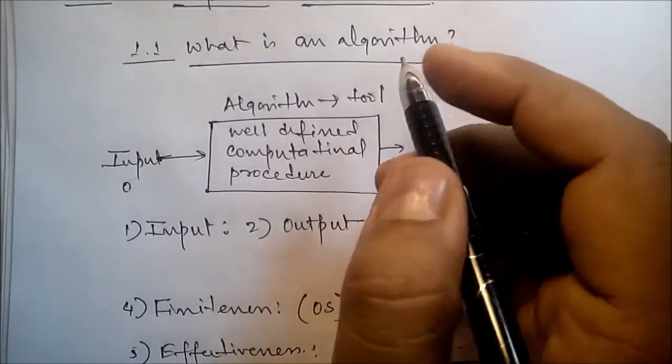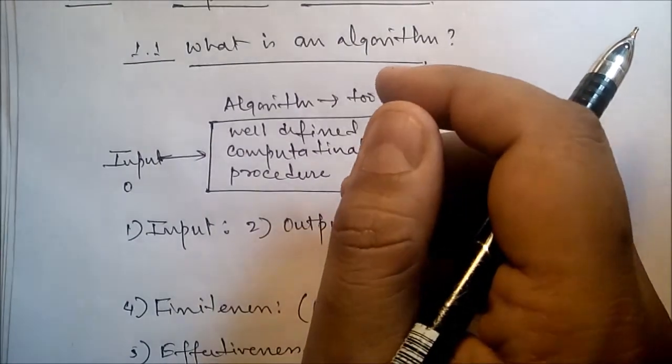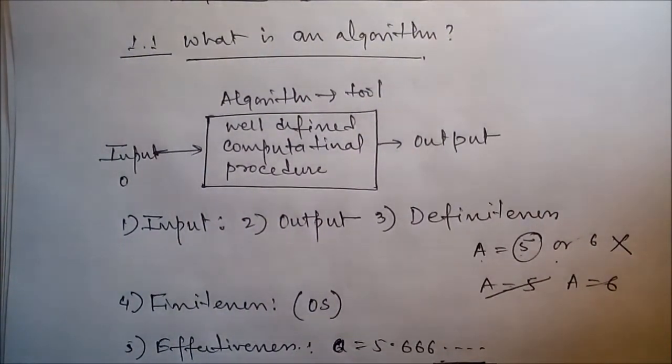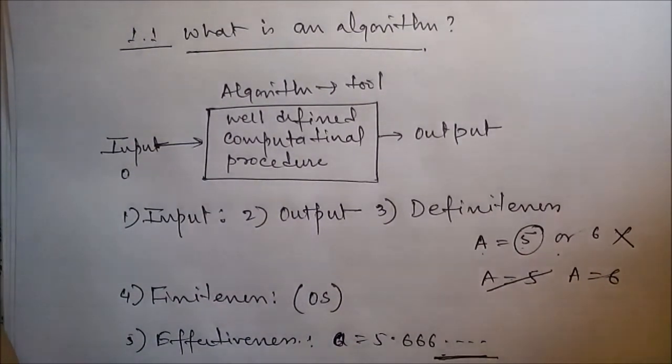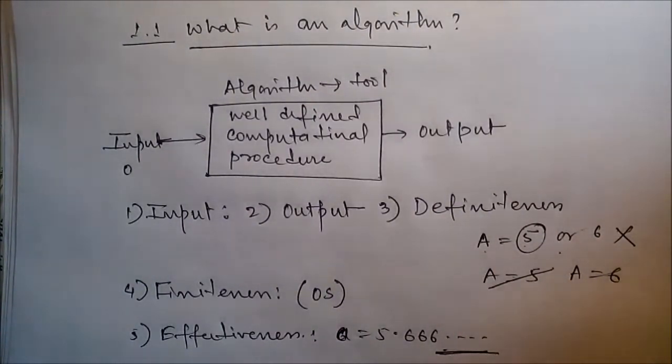Hello friends, in this video we'll talk about the introductory part: what is an algorithm, area of study, why algorithm, and how to judge an algorithm. So what is an algorithm? An algorithm is any well-defined computational procedure that takes some value or set of values as input and produces some value or set of values as output.